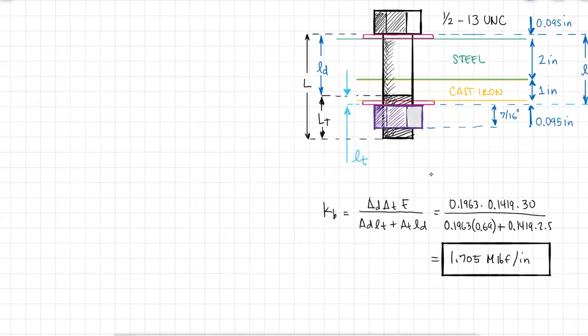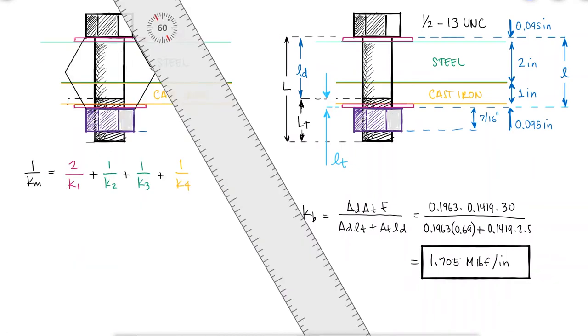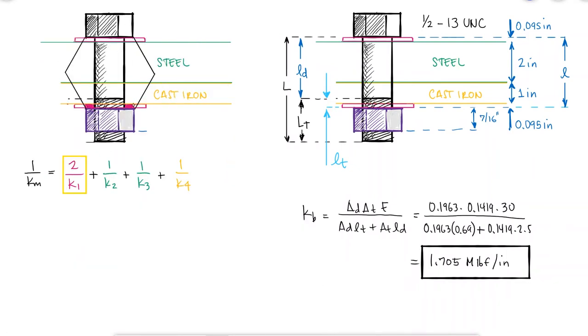For the stiffness of the members, we need to consider four separate member stiffness values. One that will be multiplied by 2 for the identical washers, one for the cast iron, and two, one for each section of the steel.